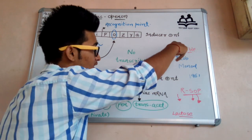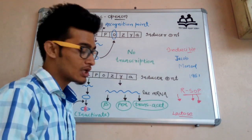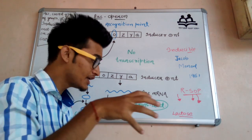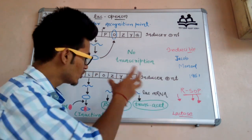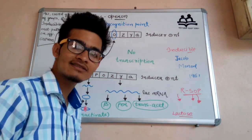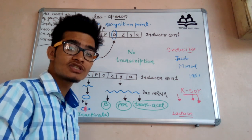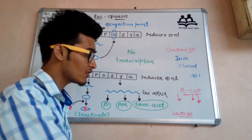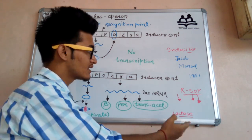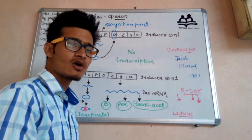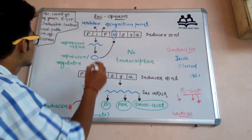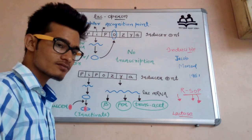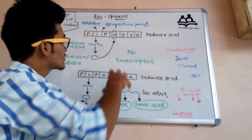Lactose acts as an inducer in this system and promotes the system to synthesize different kinds of enzymes which are responsible for the breakdown of lactose itself. That's why it is known as an inducible operon. The Lac operon system works in a coordinated manner — this is the metabolic pathway of lactose.